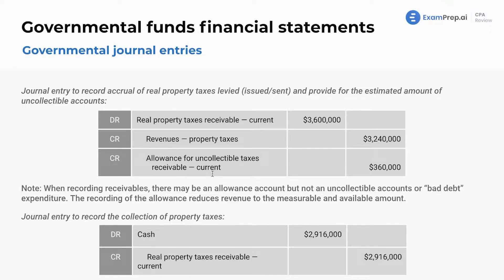And then we have allowance for doubtful accounts — that is also something we see in corporate accounting if we have that threat of not receiving all of our money. These numbers are made up, but the question could ask you and tell you what the numbers are: how much do you expect to receive, what percentage is uncollectible? Pretty standard, nice-looking journal entry there.